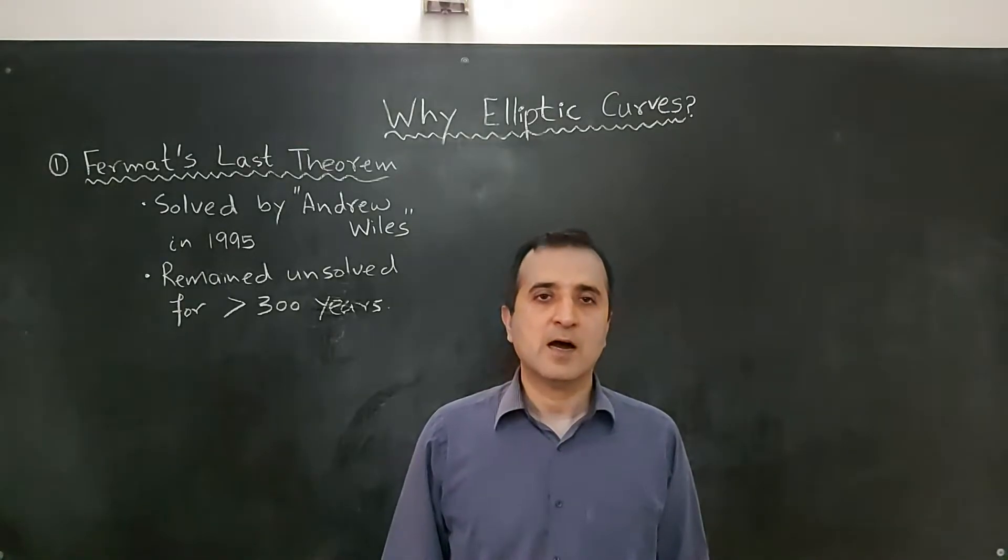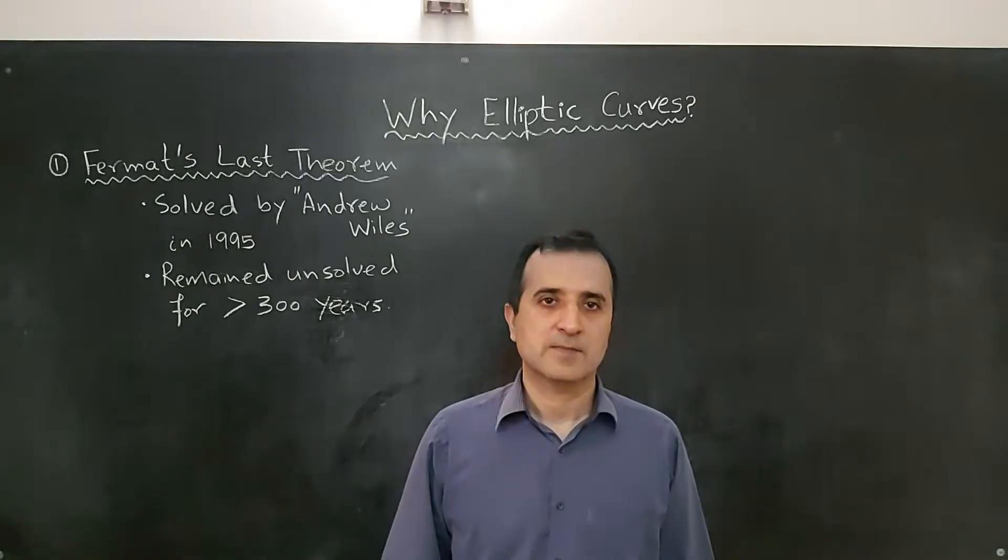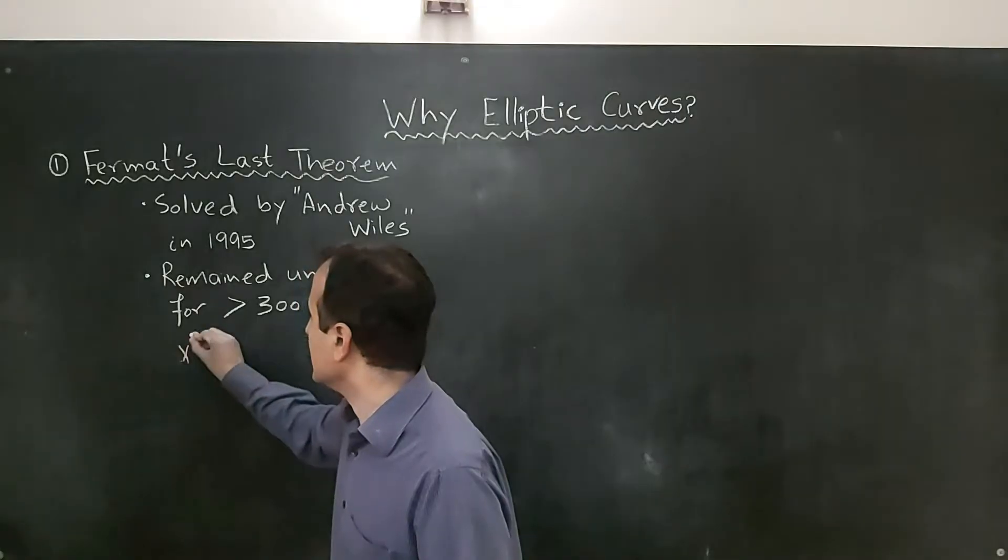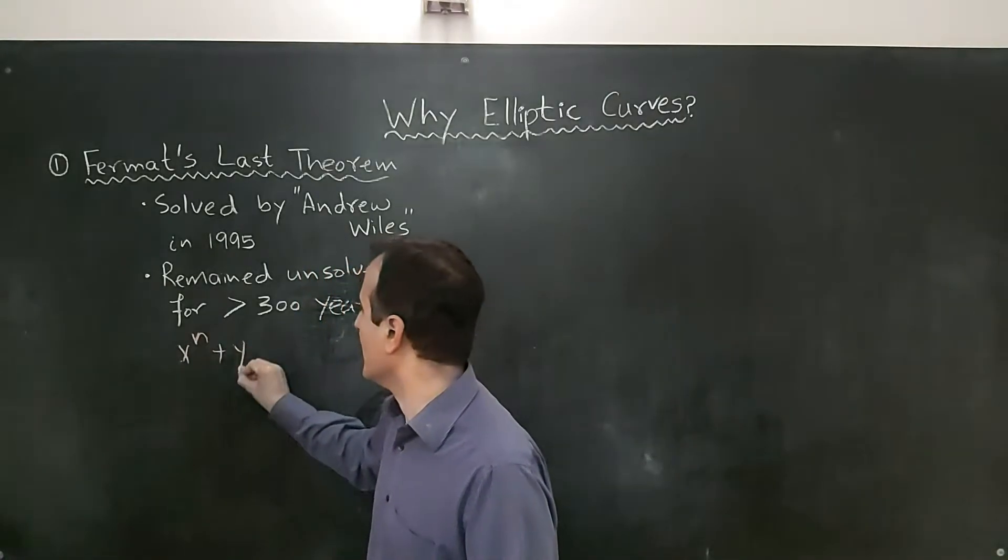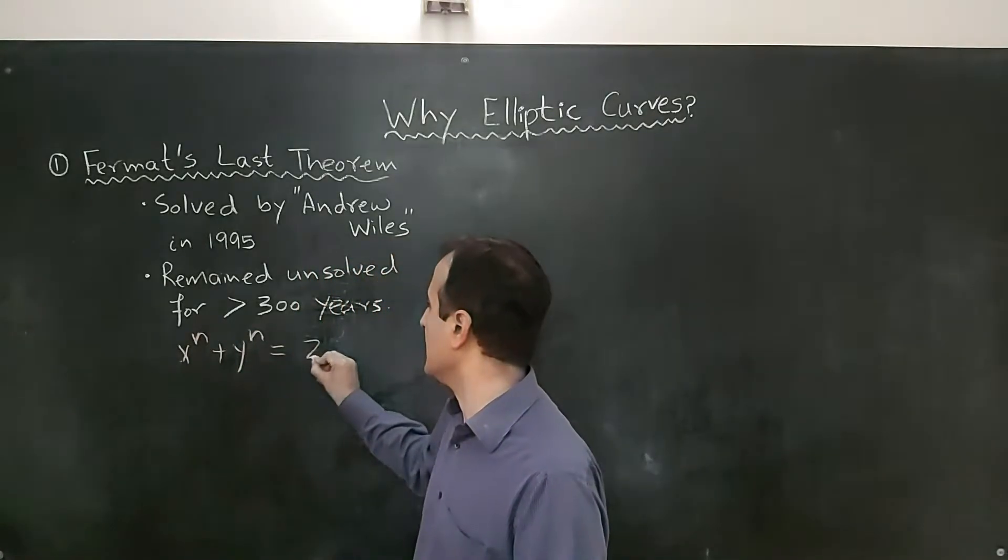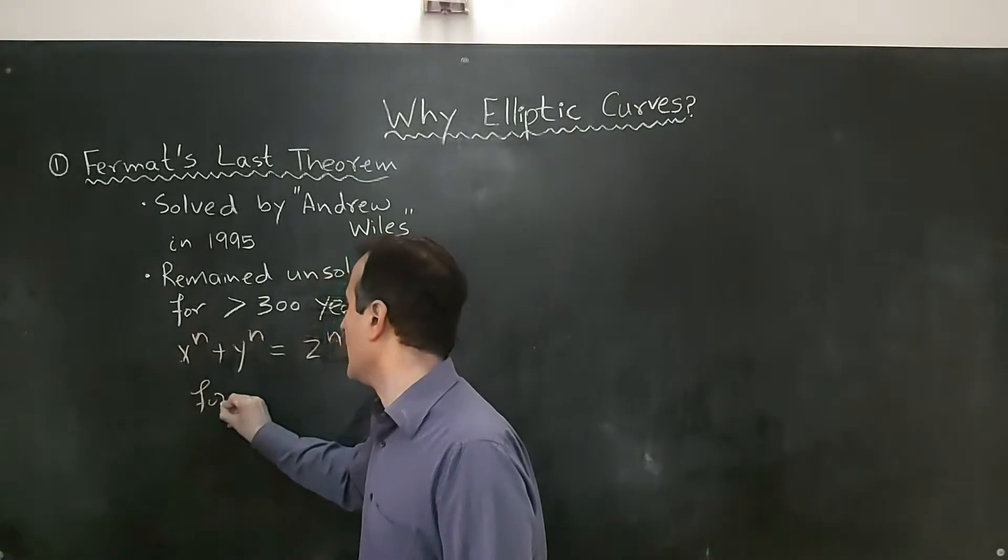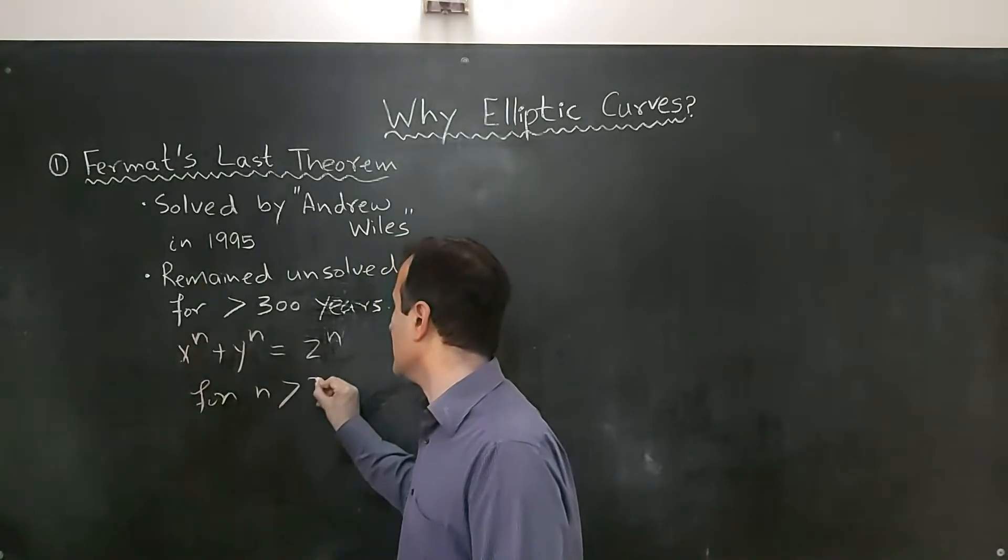The problem remained unsolved for over 300 years. Fermat's last theorem says that the equation x^n plus y^n equals z^n has no solution for n greater than 2.